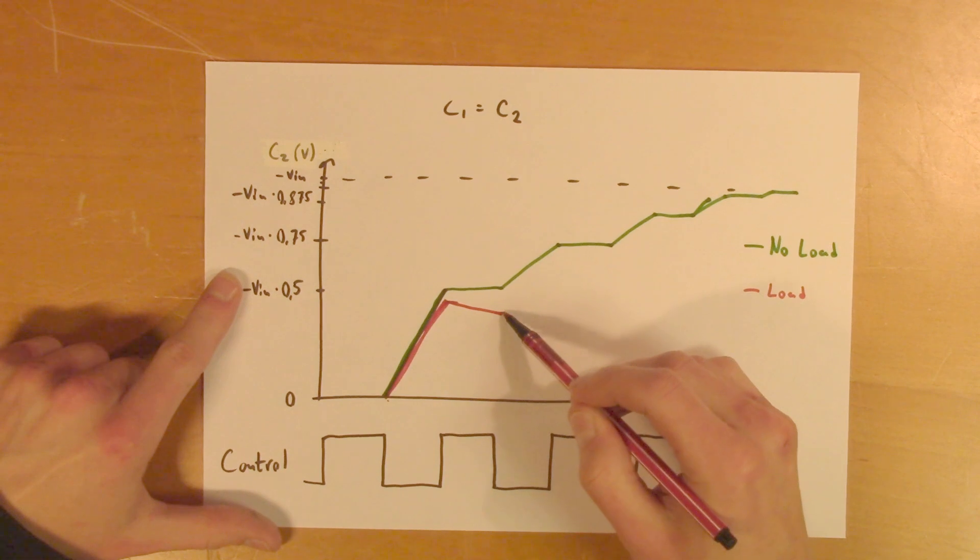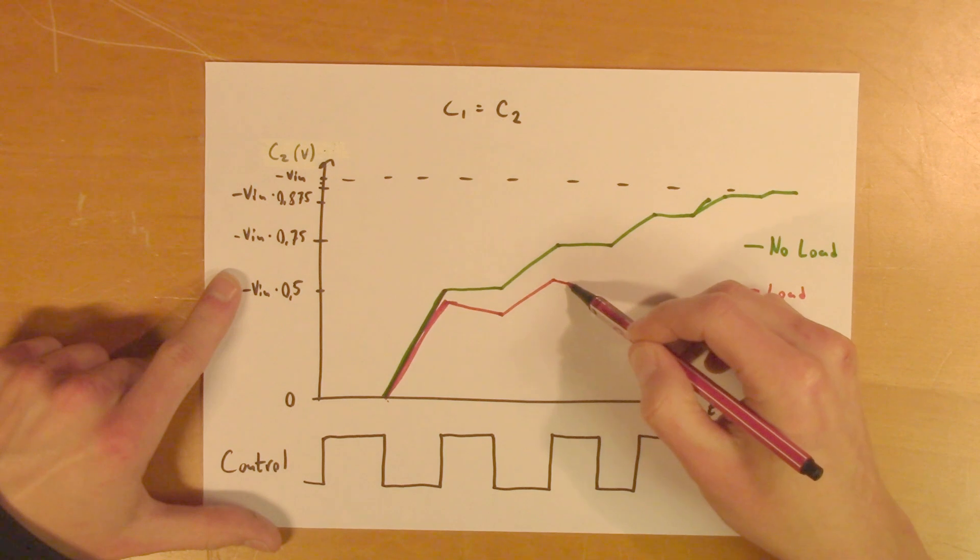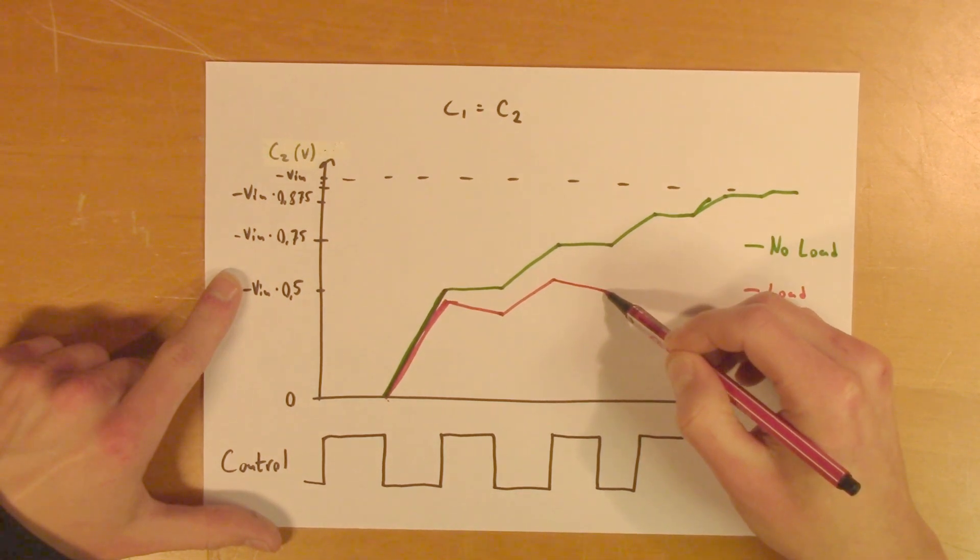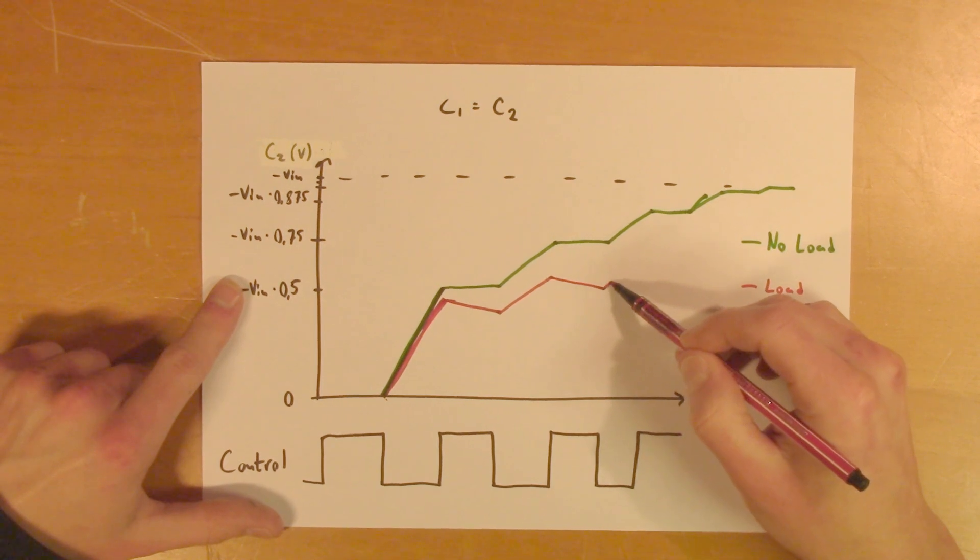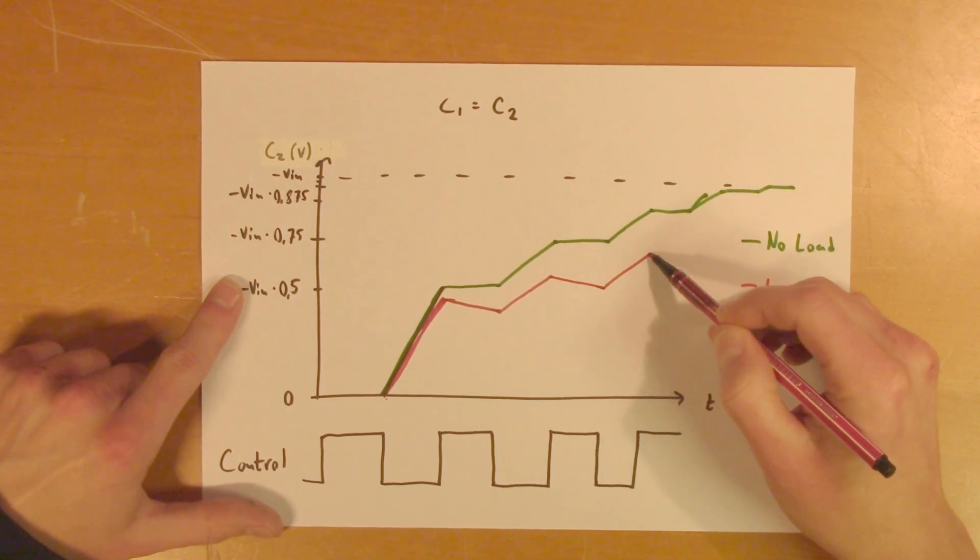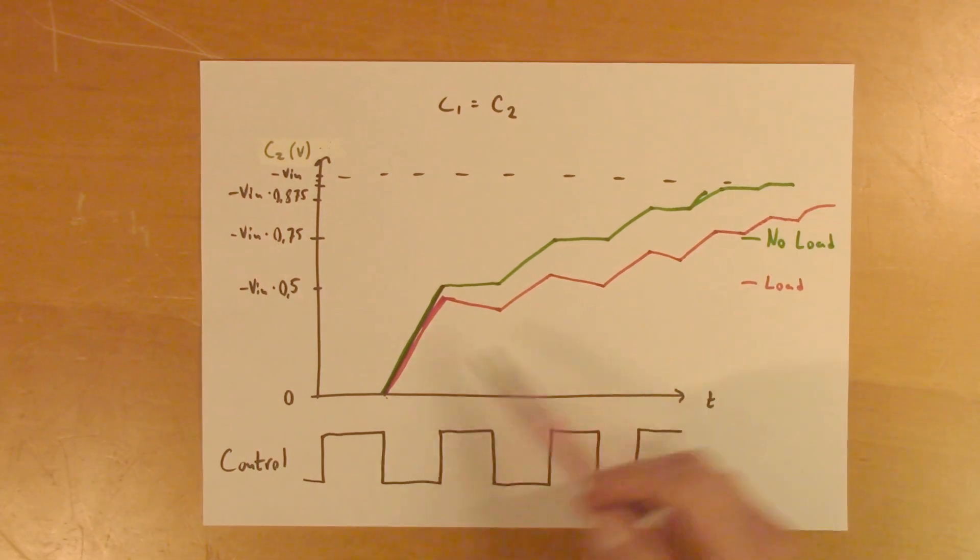And then it will charge up once again. Then it will decrease a bit during the charging of C1. And then it will increase again. And it will continue like this.